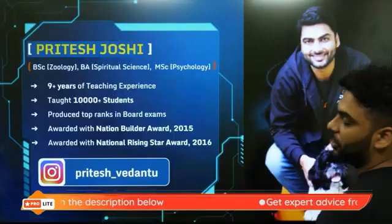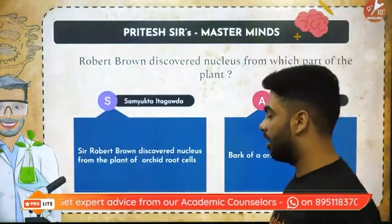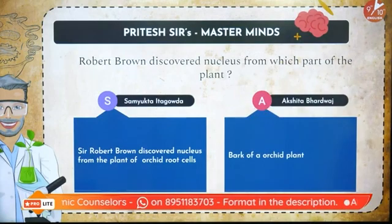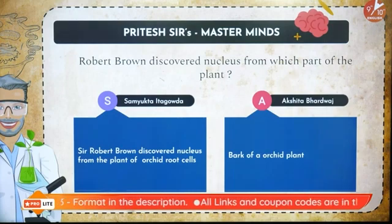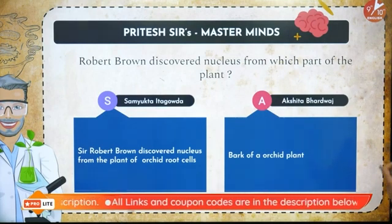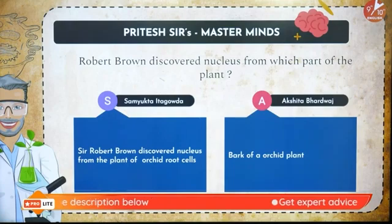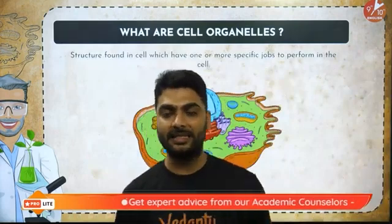You can follow me on Instagram at Pritesh and the subhedanthu. Now, those who gave the correct answer: Robert Brown discovered the nucleus from the bark of the orchid plant. Samyukta and Akshita Bhardwaj got that right — it was from the bark of the orchid plant. Now we are talking about cell organelles.